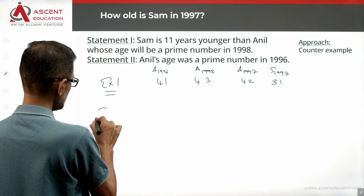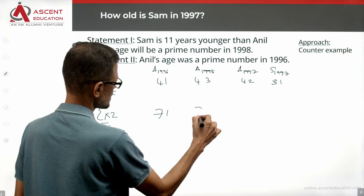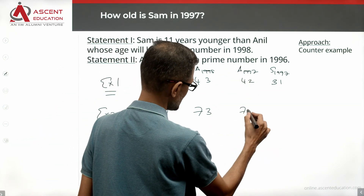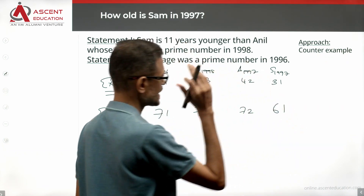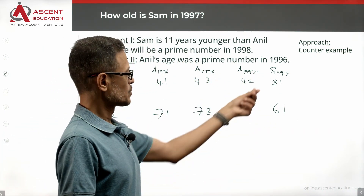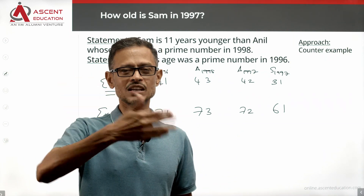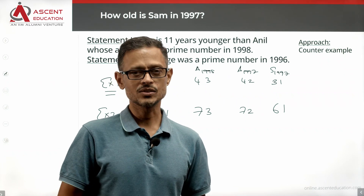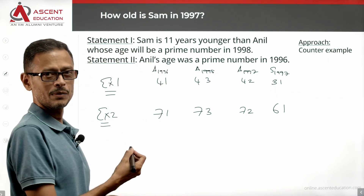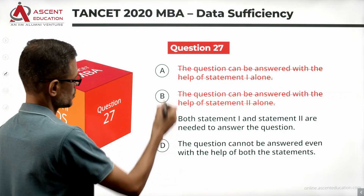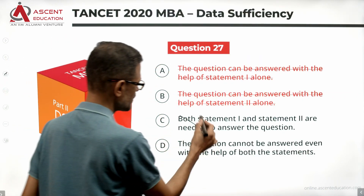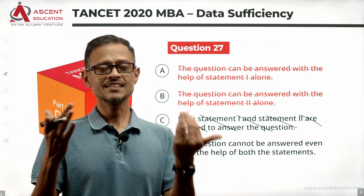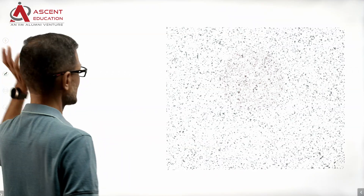I can immediately think of one more pair: 71 and 73 — both prime numbers. This gives a different value for Sam's age in 1997. So the correct answer to the question is that the data is not sufficient — Choice D is the answer to this question.